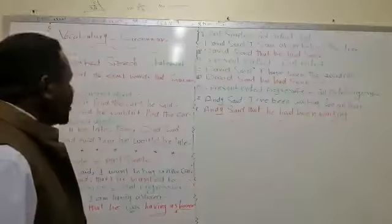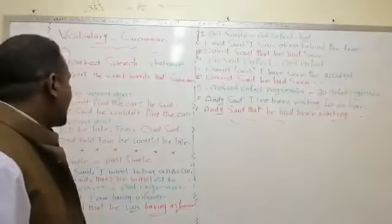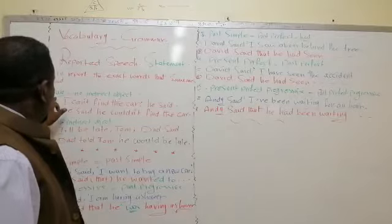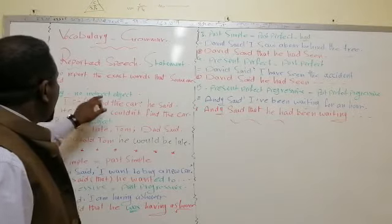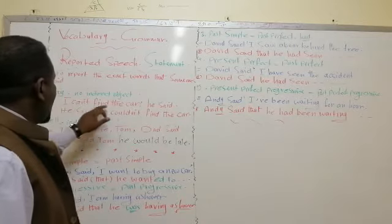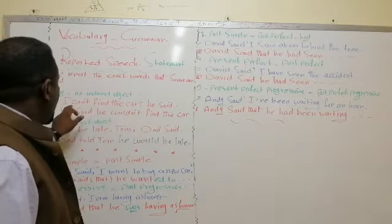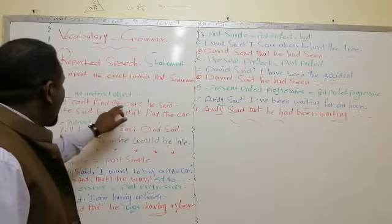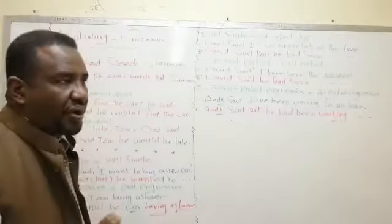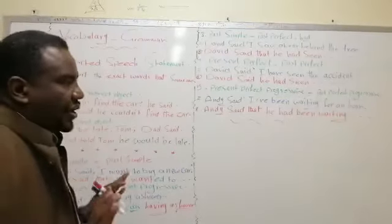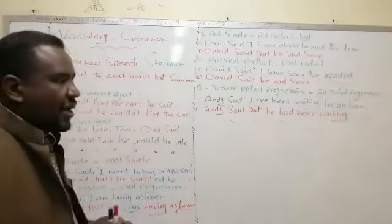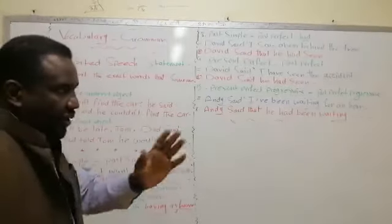But when do we use 'tell' and 'say'? We use 'say' when there is no indirect object. For example: someone said, 'I can't find my cup.' He said — but here, he didn't point to someone. He said only 'I can't find my cup.' He did not point to someone directly.